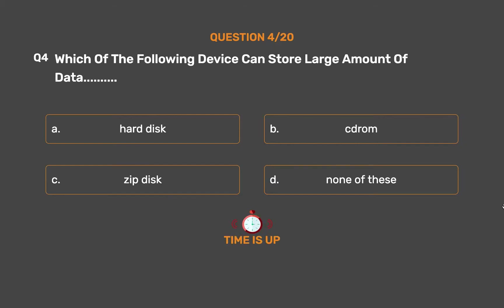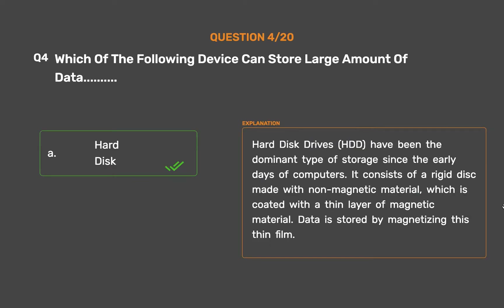The correct answer is Option A: Hard disk. Hard disk drives (HDD) have been the dominant type of storage since the early days of computers. They consist of a rigid disk made with non-magnetic material coated with a thin layer of magnetic material. Data is stored by magnetizing this thin film.